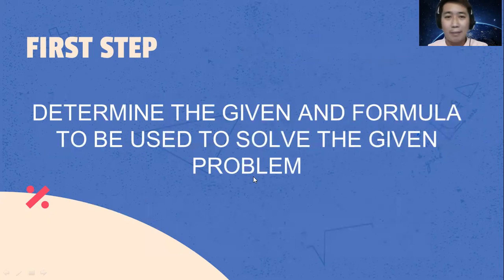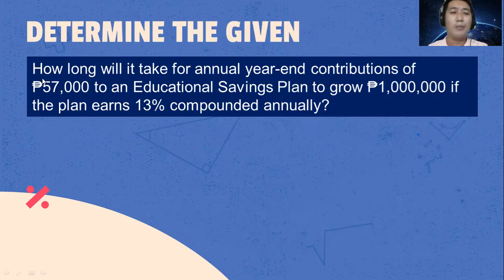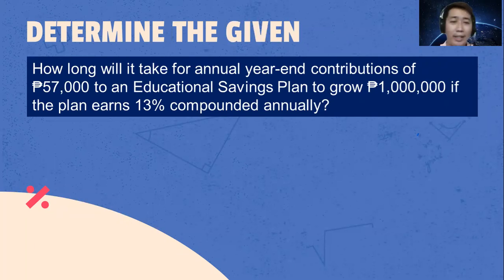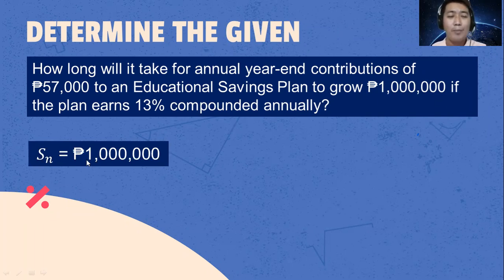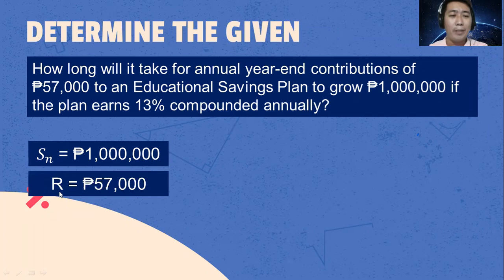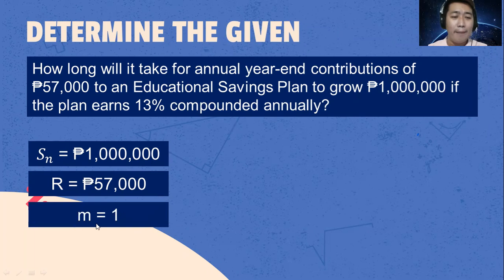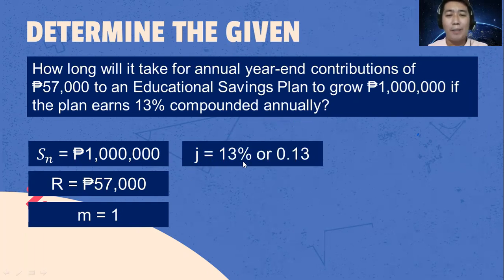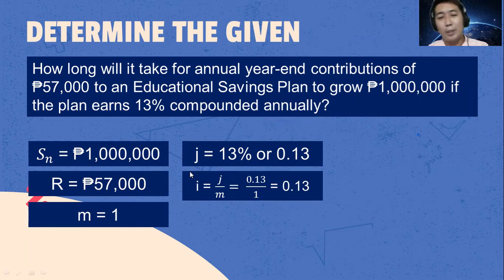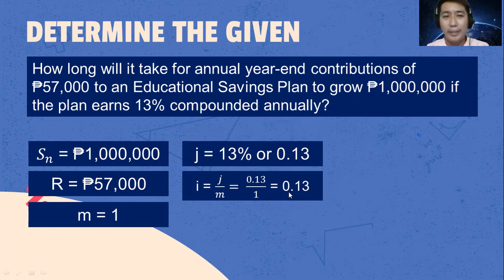Let's now identify the given from the problem. S sub n, the future value, is 1,000,000 pesos. The periodic payment R is 57,000 pesos. M is 1, the number of compoundings per year, because it's annually. J is 13% or 0.13, the nominal interest rate. To get the value for I, we divide J by M: 0.13 divided by 1 equals 0.13.